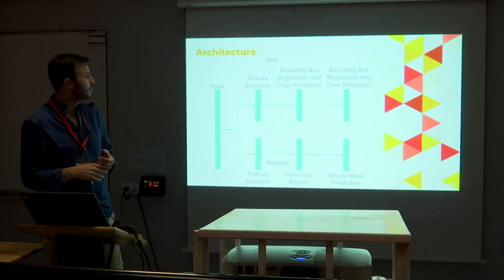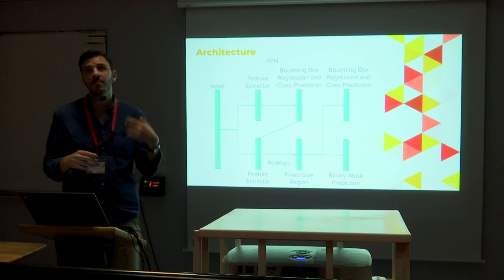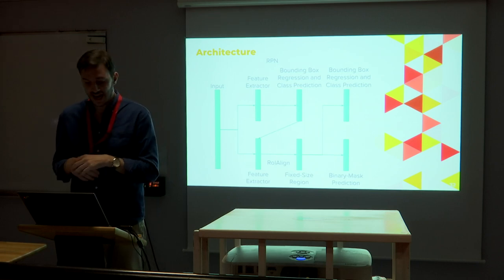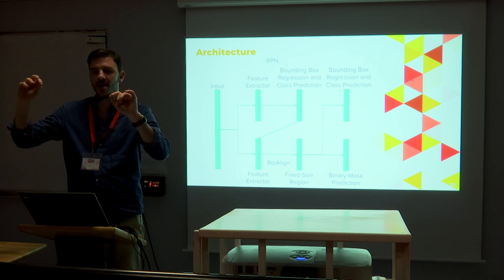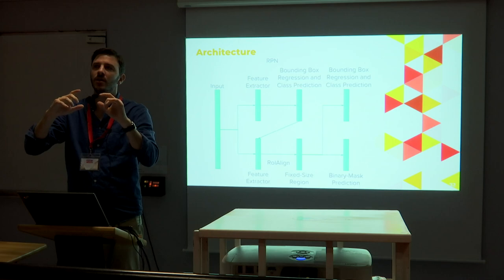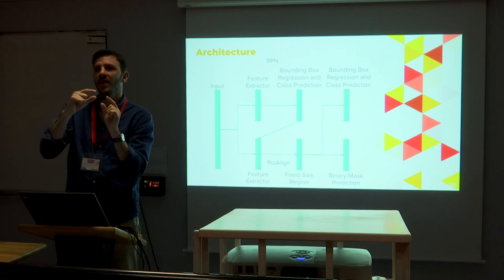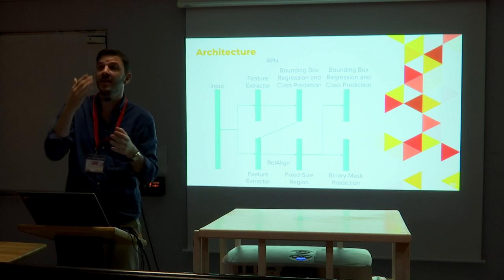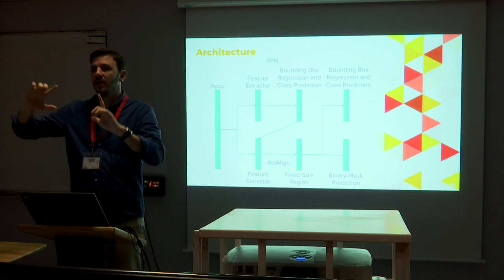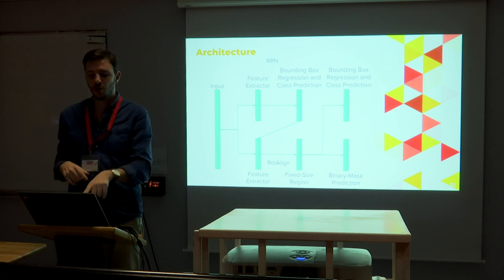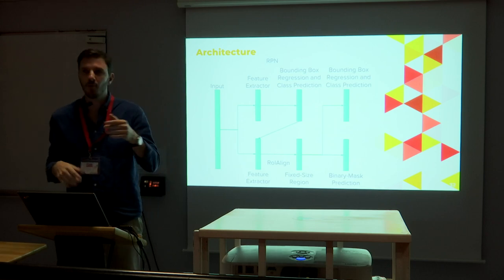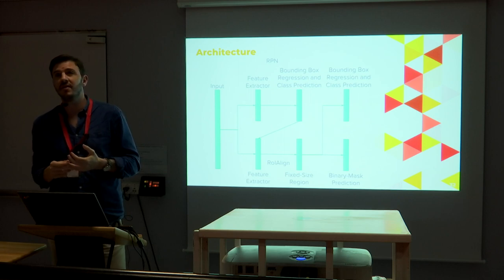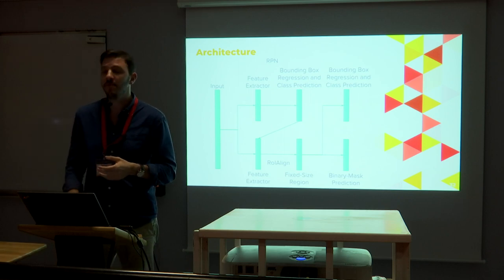The Mask RCNN architecture includes a Regional Proposal Network as in Faster RCNN, plus a new algorithm called ROI Align. The problem before was that when you detect the box in a smaller representation, passing it back to the real image introduced a misalignment. ROI Align solves this. As before, it adds bounding box regression and class prediction similar to Faster RCNN, and adds binary mask prediction as a third output.